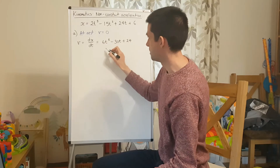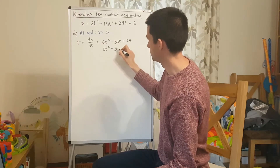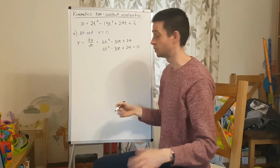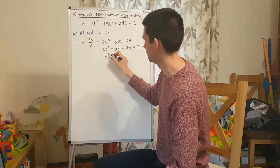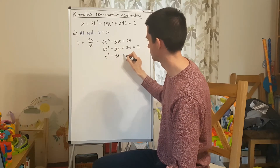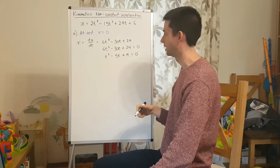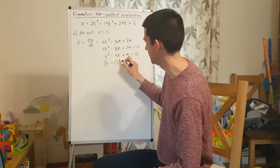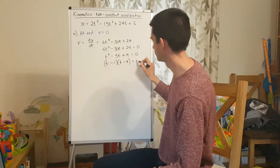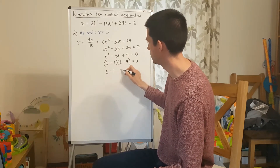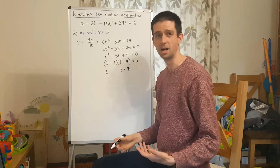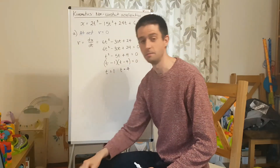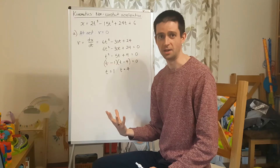Because I want the velocity to equal zero, I set 6t squared minus 30t plus 24 equal to zero and solve. I can divide through by 6 to get t squared minus 5t plus 4 equals zero, which factorises to (t minus 1)(t minus 4). So my two solutions — the two times at which the particle is at rest — are t equals 1 and t equals 4. At those two times the particle is instantaneously at rest, not moving.